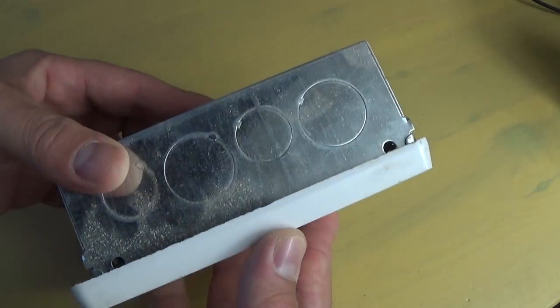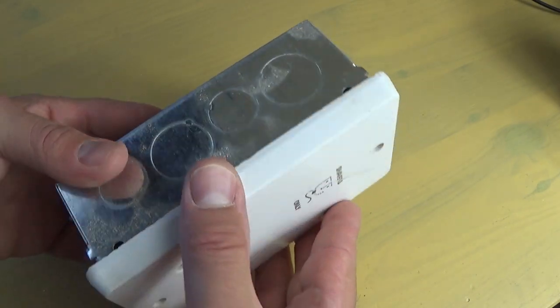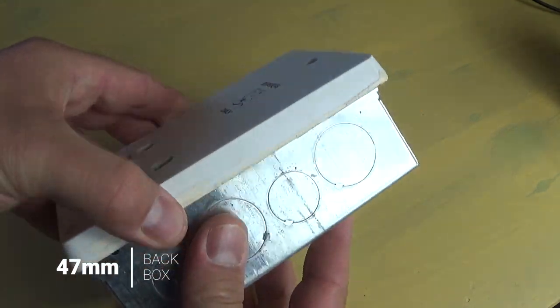And the last important bit I want to mention is the depth of the back box for the shaver socket. As the socket is quite thick because of the transformer, you need to install a 47 millimeters back box.